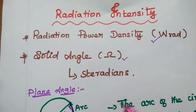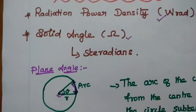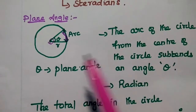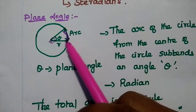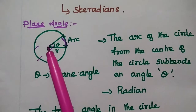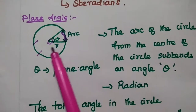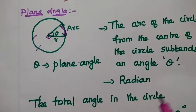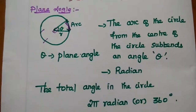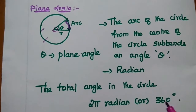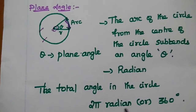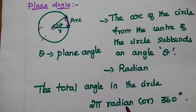Generally we know the angle that is called as plane angle. So what is plane angle? We are going to consider a plane circle. The arc of the circle, from the center of the circle, creates an angle theta. This theta is called as plane angle. The unit of the plane angle is radian. The total angle of the circle is 360 degrees, which we can represent as 2π radians.